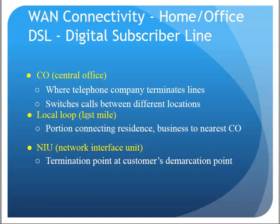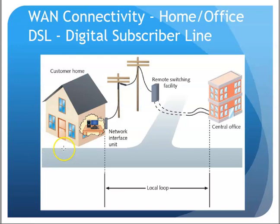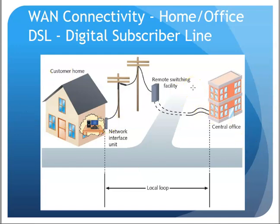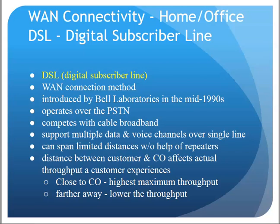The local loop or last mile is the piece of cable coming to a person's house or residence. The Network Interface Unit is the DMARC point at the site. The phone company's switching office might have a remote switching facility in a neighborhood servicing all the homes on a street. The phone line would go to the house, and the box on the side of the house was the DMARC point where the phone company's equipment ended and your equipment began.